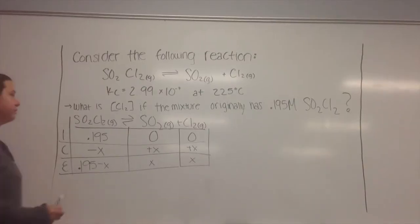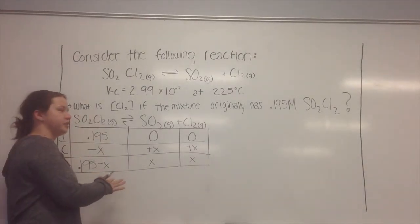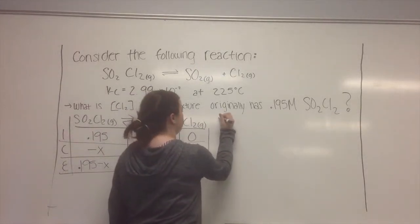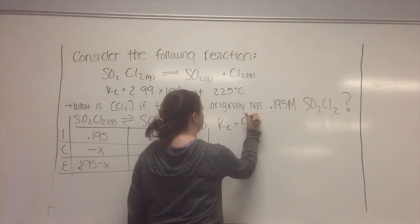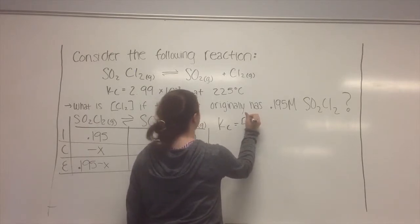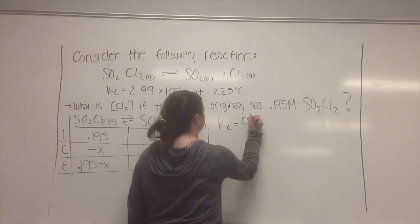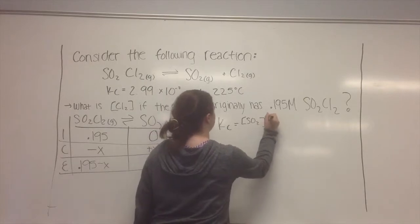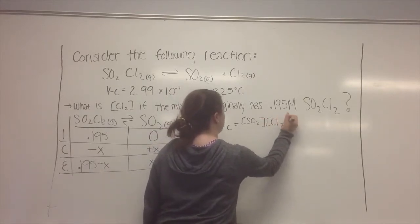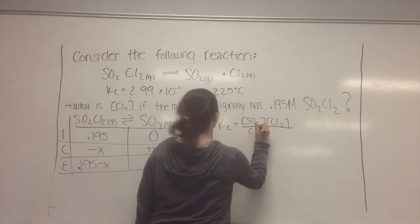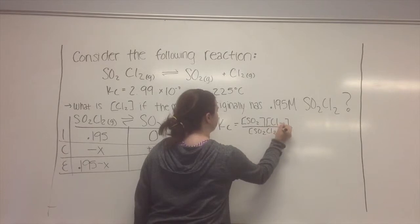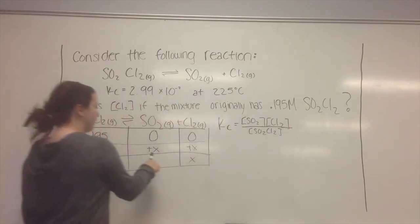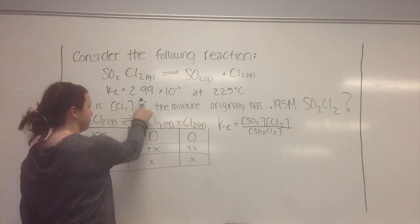So after you've completed your ICE table, you want to set up your equation for K sub C. So that's going to be K sub C is equal to the concentration of your products, which will be the concentration of SO2 times the concentration of Cl2, over the concentration of your reactants, which is just SO2Cl2. And then you want to plug in the values that you have in your table and the K sub C that's given.